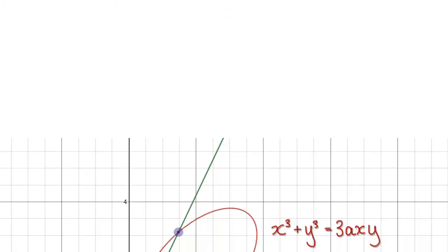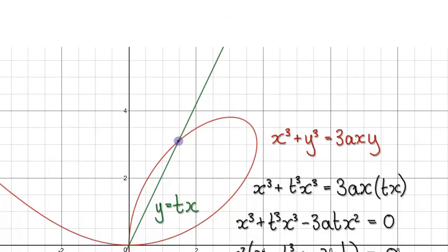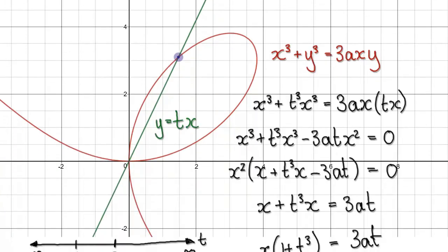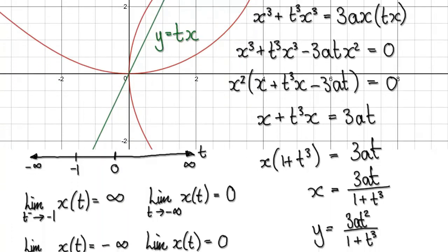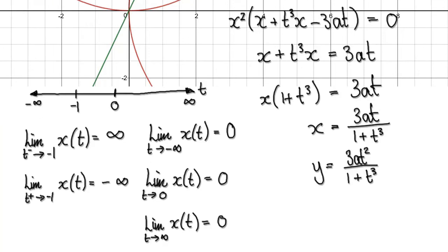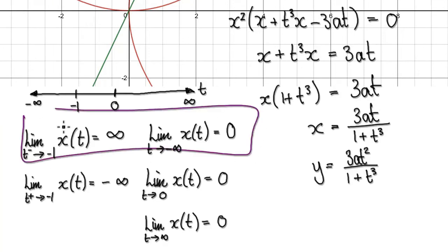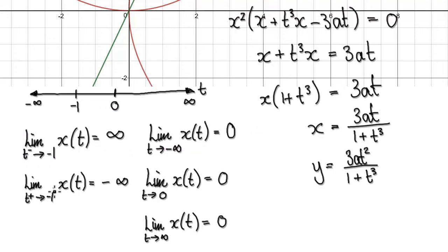Following on from the previous video, we got to this stage here. Now we're going to look at this. So we're going to take the limit as t heads towards negative 1 from the right-hand side.